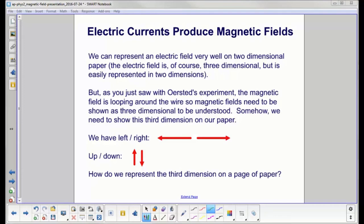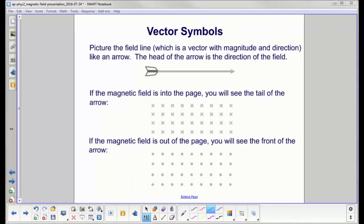We can represent an electric field very well on two-dimensional paper. The electric field, of course, is three dimensions, but we can get a pretty good idea in two, right? Here's a positive charge. Even though this really would look like a sphere in three dimensions with all the lines coming out, this lets us communicate what's going on. However, the magnetic field loops around a wire, so magnetic fields need to be shown as three-dimensional to be understood. Somehow we need to show this third dimension on paper. Left and right, that's good for vectors. Up and down. How do we represent the third dimension on a page of paper or whiteboard?